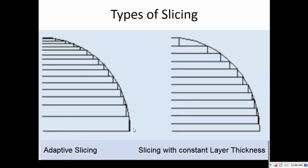Here we have two components: one with constant layer thickness, and one where the layer thickness has been changed. You can see that the layer thickness is larger where the build orientation is zero or close to vertical, and as the geometry bends away from the vertical, the layer thickness is reduced. In both cases the total number of layers is almost the same, but the adaptive version has a much smoother profile throughout the geometry.